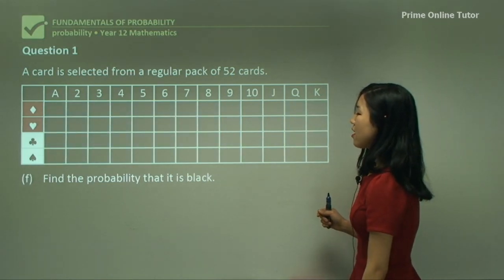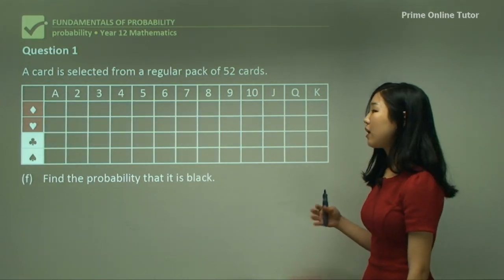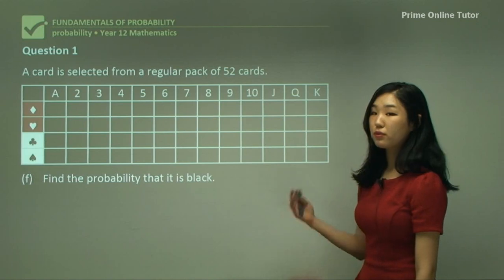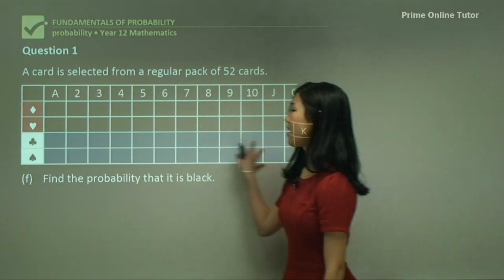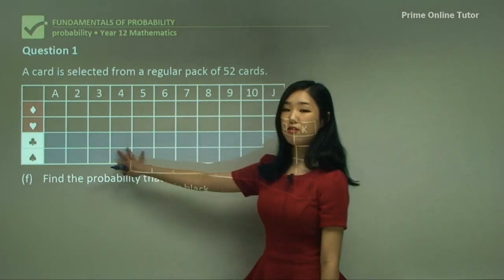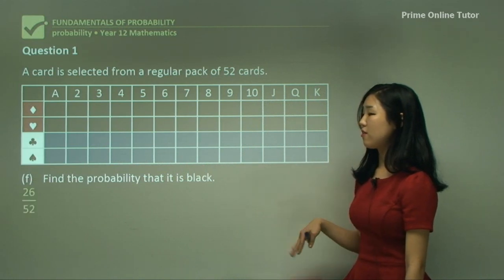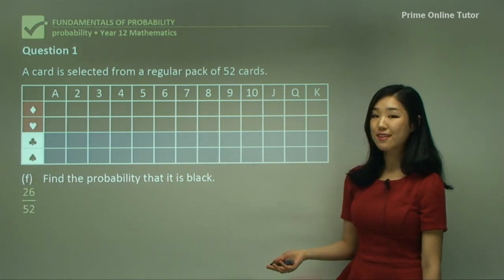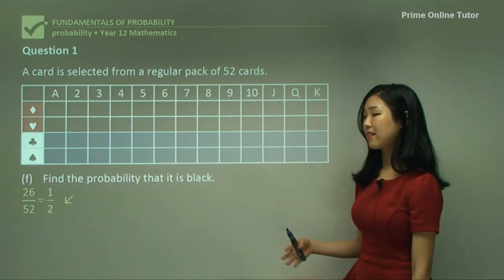Question 1F: find the probability that the card is black. I mentioned before that black is exactly half the cards. So it's simply 26 out of 52, which simplifies to 1 over 2. Question 1G: find the probability that the card is a picture card. Picture cards are the court cards — Jack, Queen, and King — so there are 12 out of 52, simplified to 3 over 13.